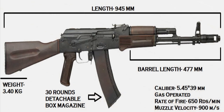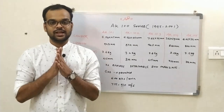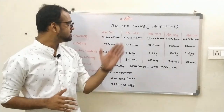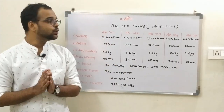The third weapon of this family is the AK-74, which came into use in 1974. It has a caliber of 5.45×39mm, overall length of 945mm, unloaded weight of 3.40kg, barrel length of 477mm, a 30-round detachable box magazine, and is a gas-operated firearm which can fire 650 rounds per minute with a muzzle velocity of 900 meters per second.